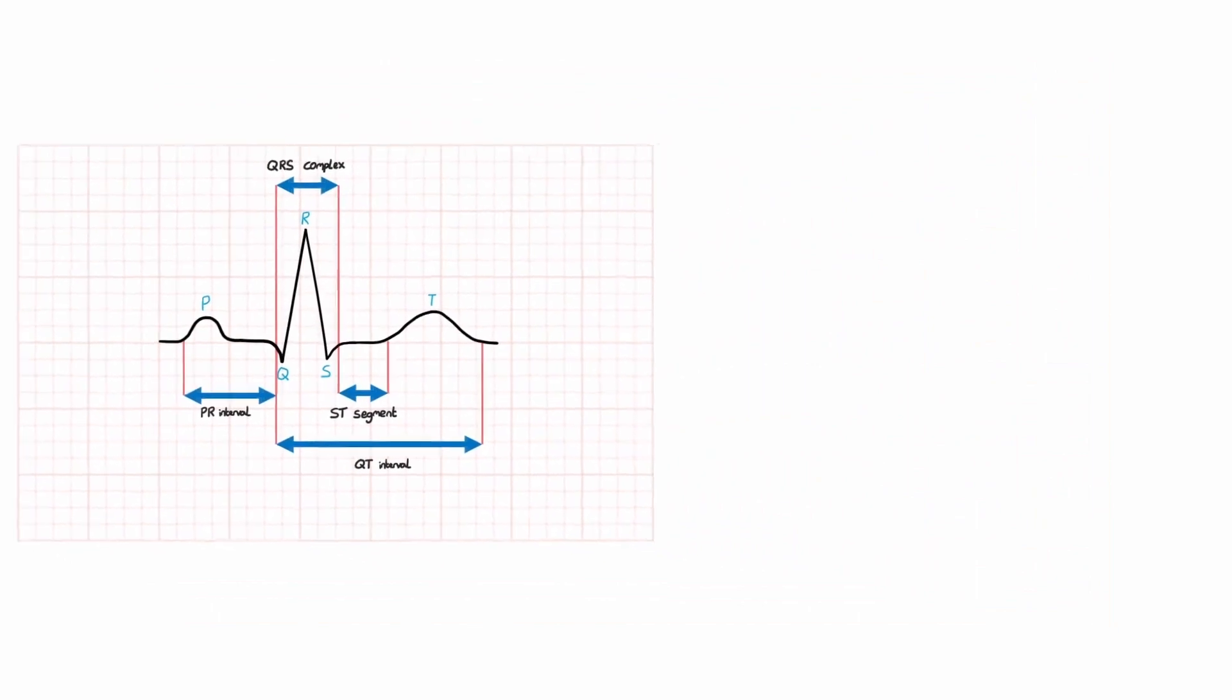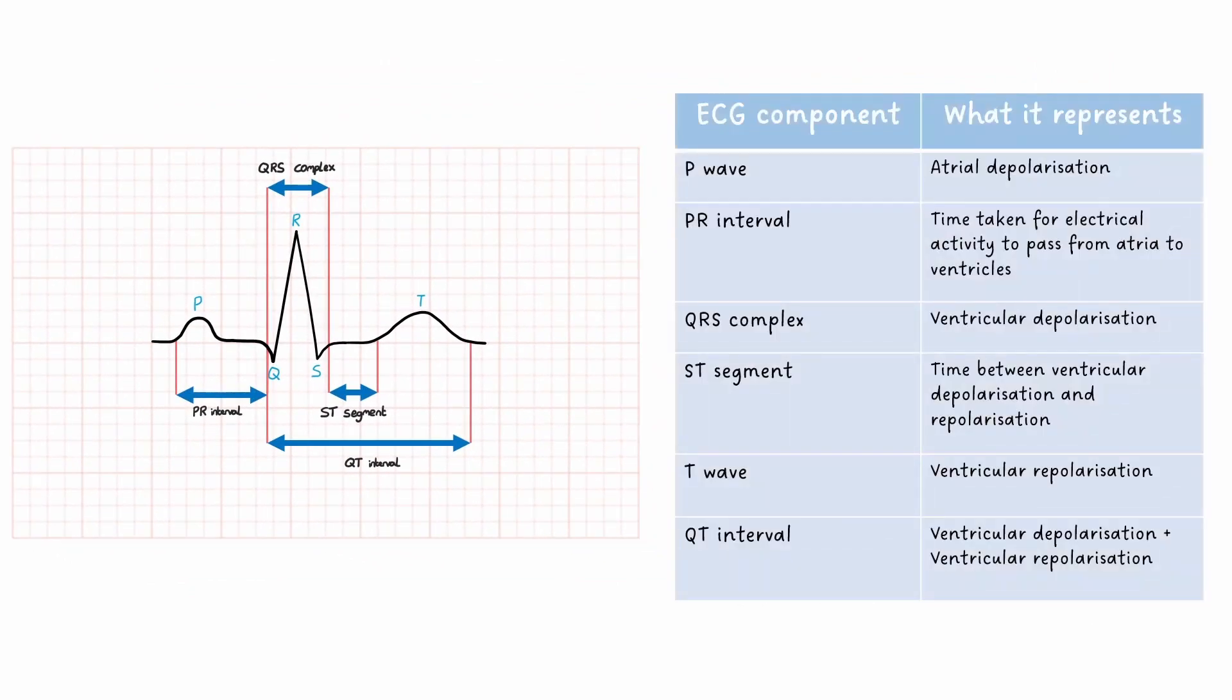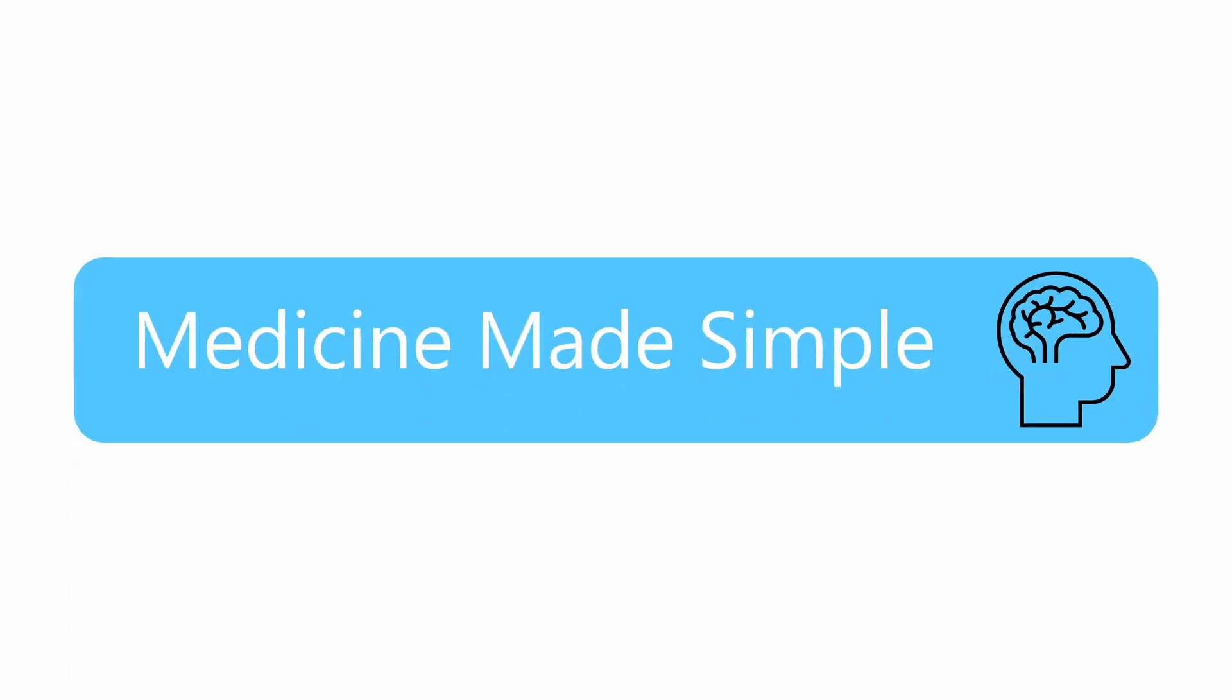Abnormalities in any of these waves, complexes, intervals or segments can represent pathology in the heart, but also elsewhere in the body. We're going to cover how to identify these abnormalities in the next video, where we're going to use a systematic and easy-to-follow structure that will allow you to interpret any ECG. Thanks for watching, and see you next time.